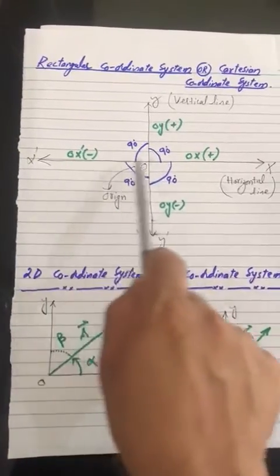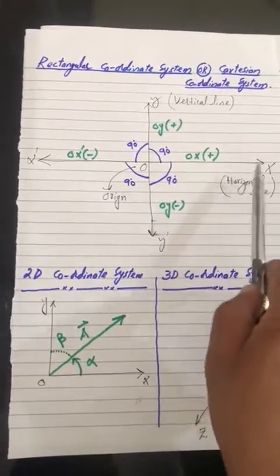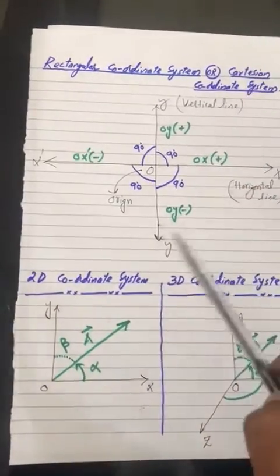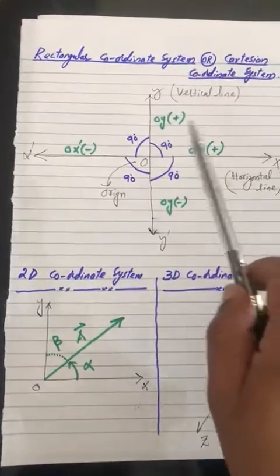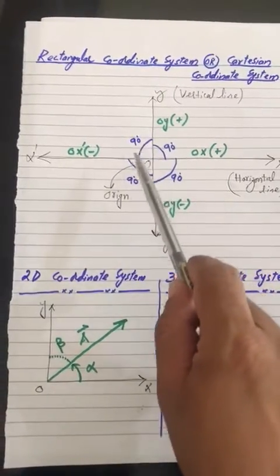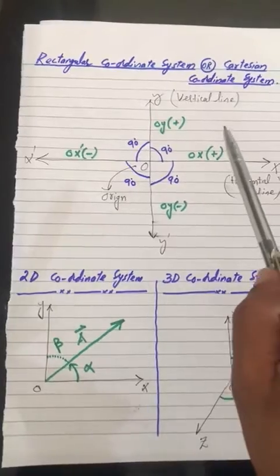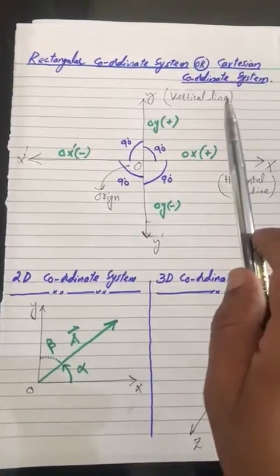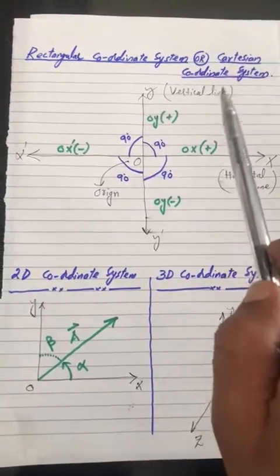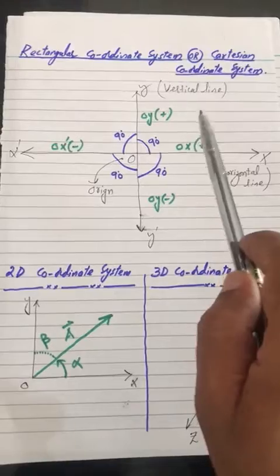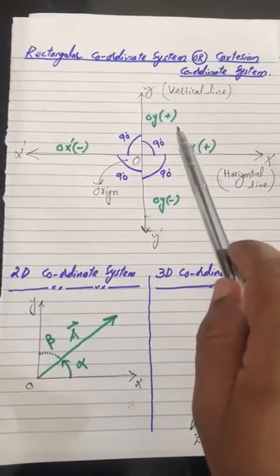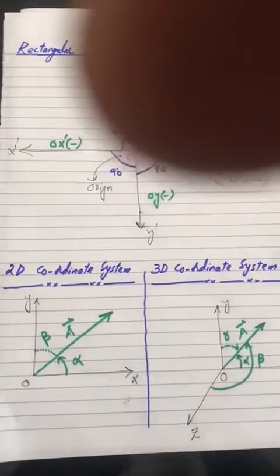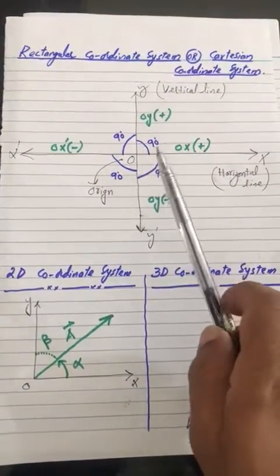This line is known as the horizontal line or x-axis, and this line is known as the vertical line or y-axis. And since these two lines make a 90 degree angle with each other, they are called rectangular lines and the whole system is called rectangular coordinate system — which consists of two lines, horizontal and vertical, making an angle of 90 degrees with each other at every point.